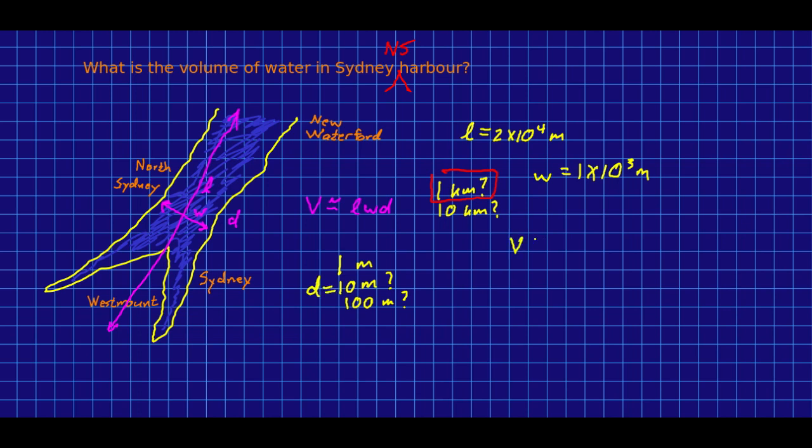And so now I can estimate the volume, because it's just the length times the width times the depth. And that's 4, 7, 8. So 2 times 10 to the 8 meters cubed.